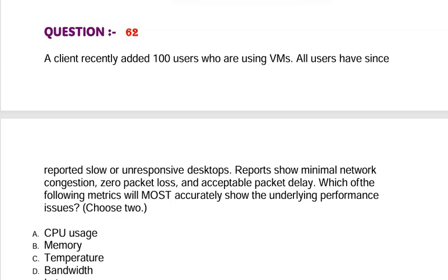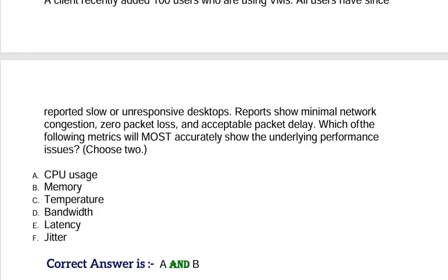Question: A client recently added 100 users who are using VMs. All users have since reported slow or unresponsive desktops. Reports show minimal network congestion, zero packet loss, and acceptable packet delay. Which of the following metrics will most accurately show the underlying performance issues? Choose two options. Option A, CPU usage. Option B, Memory. Option C, Temperature. Option D, Bandwidth. Option E, Latency. Option F, Jitter. Correct answer is Option A and Option B.